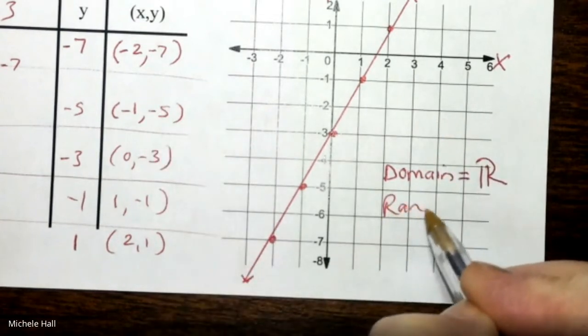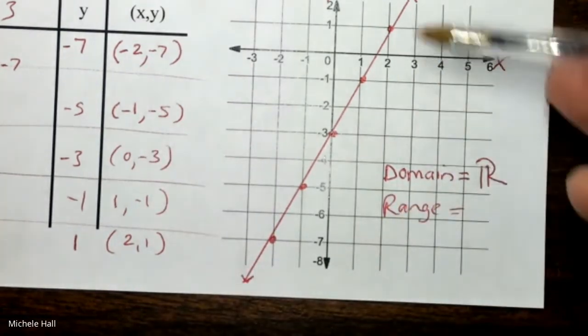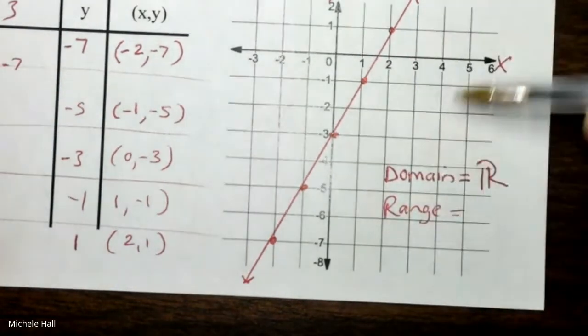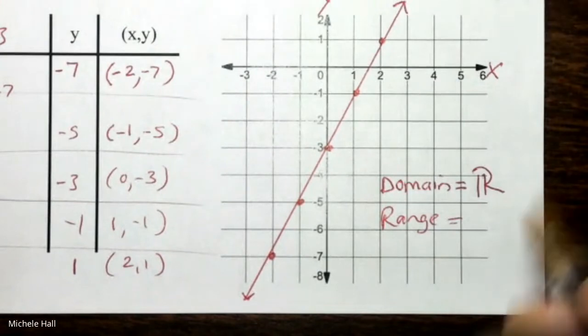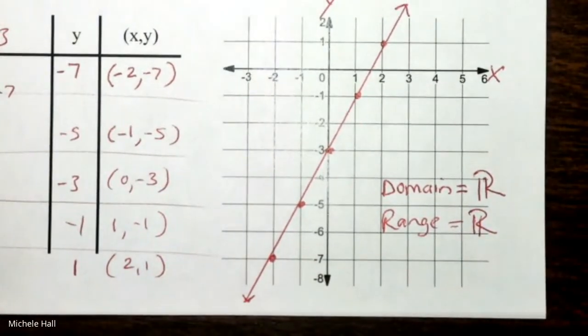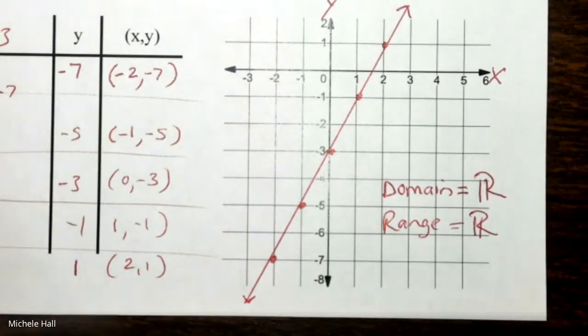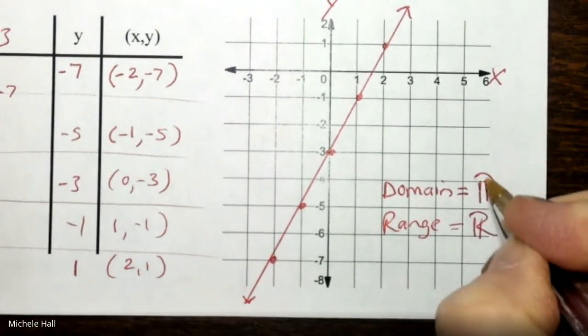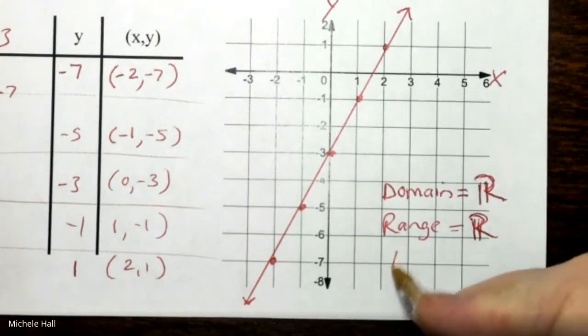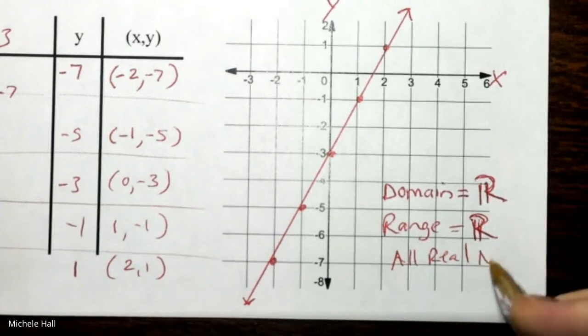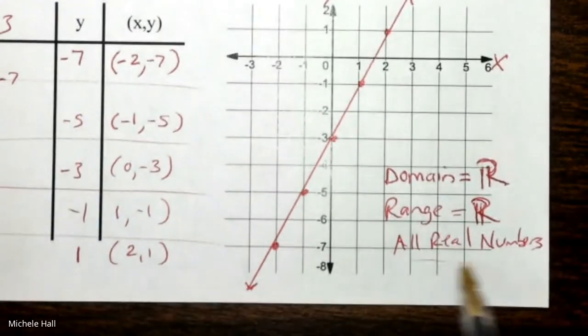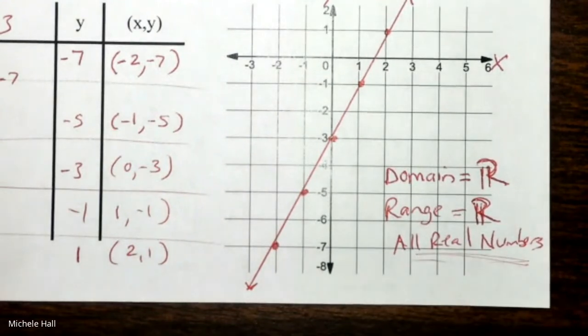And the range, the range is also going to positive and negative infinity. All the reals because it's reaching out and going up, up, up, up, up, up. So that would also be all the reals. The domain is all real numbers. And the range is all real numbers. You just put two slashes here and then make an R. That means all real numbers. You don't have to write that this part down every time, but you should write all real numbers. So you know what, that's what the R means.